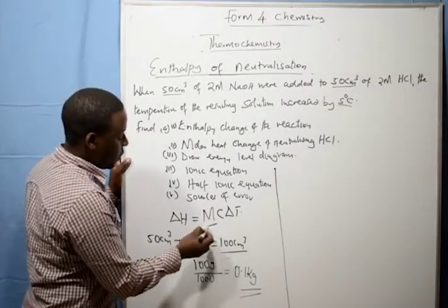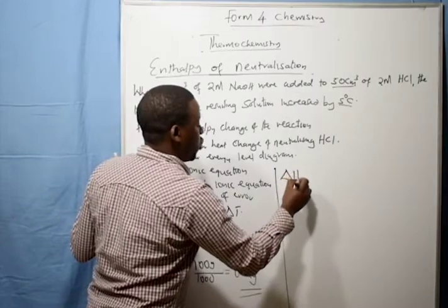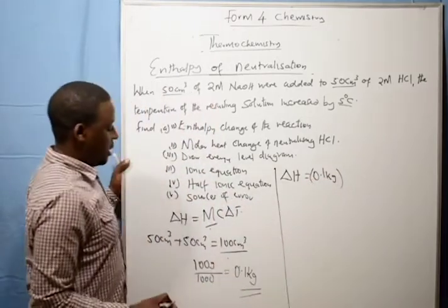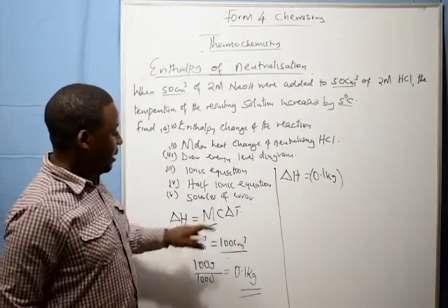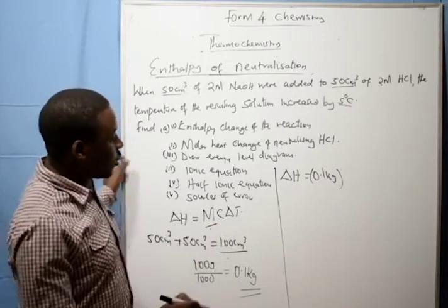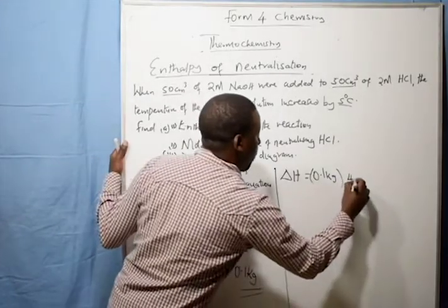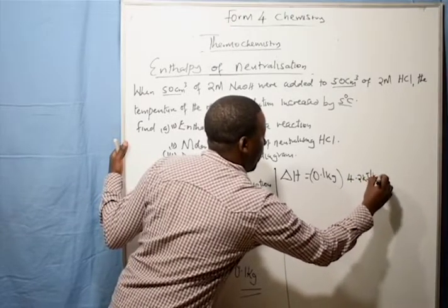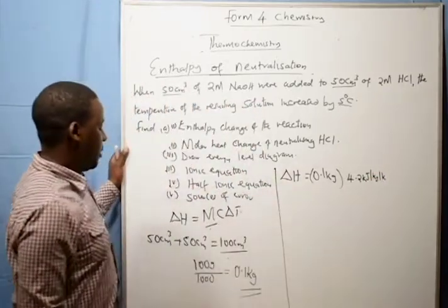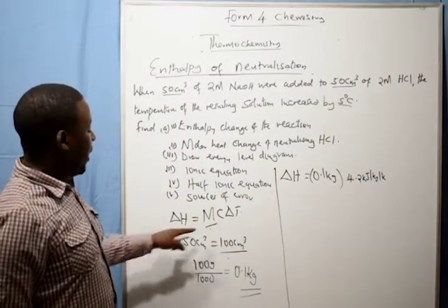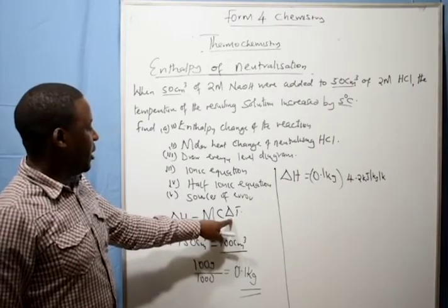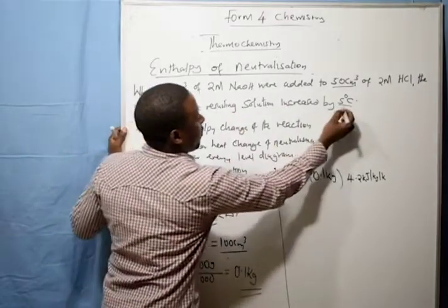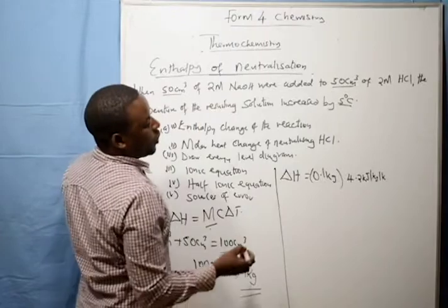So enthalpy change: you get it by 0.1 kilogram, that is the mass. But we have a capacity. The specific heat capacity is always constant. It is 4.2 kilojoules per kilogram per kelvin.